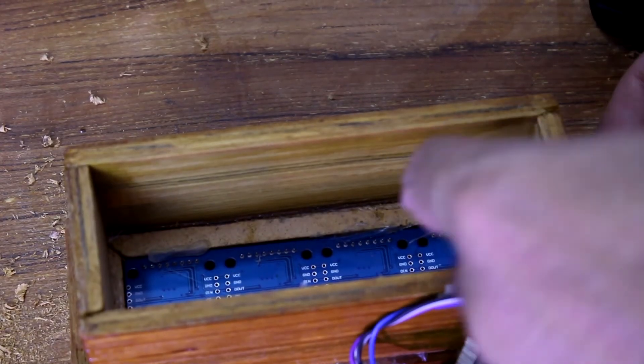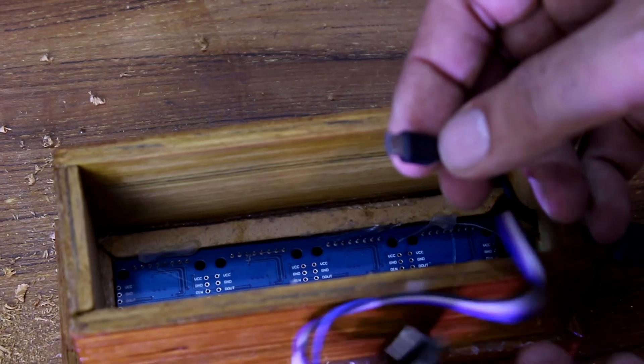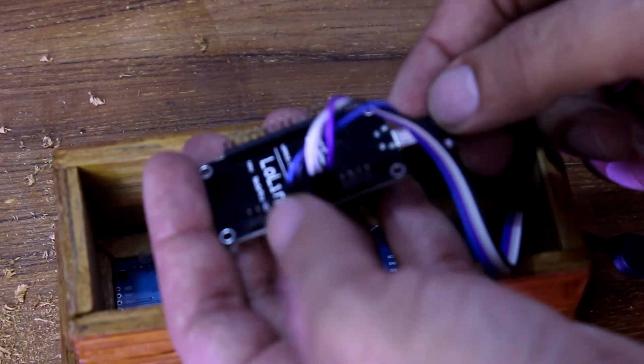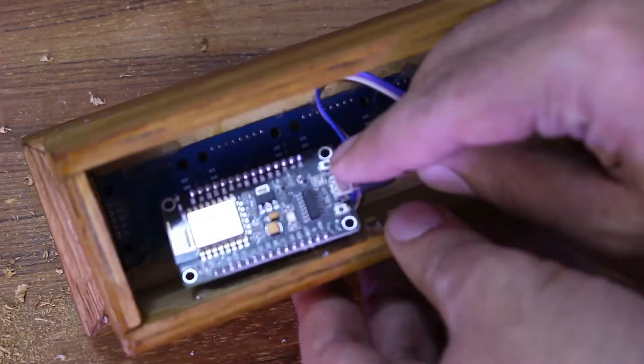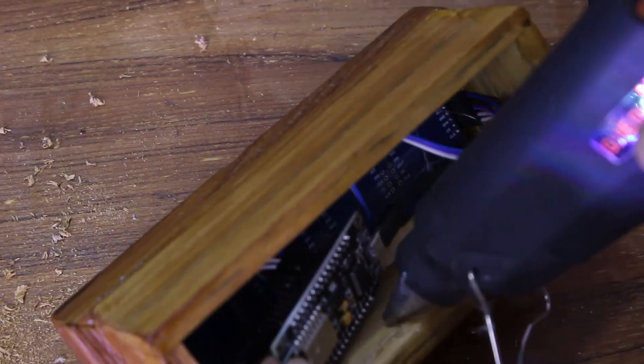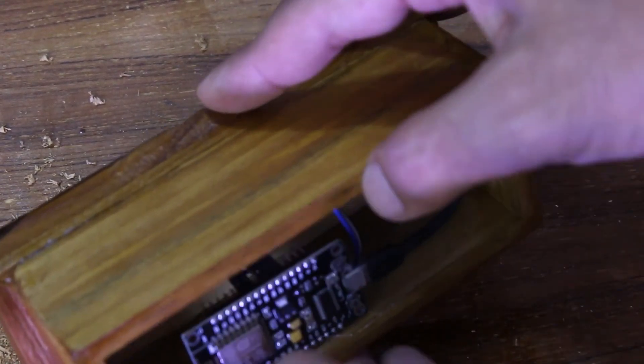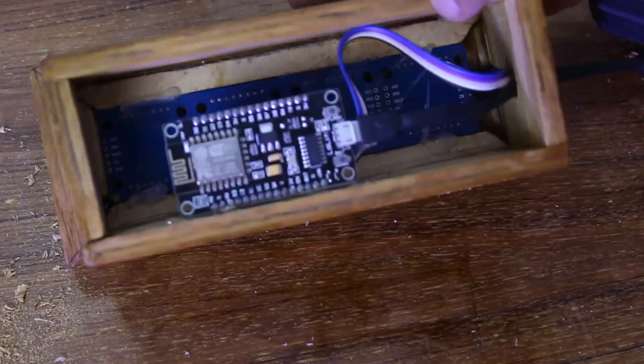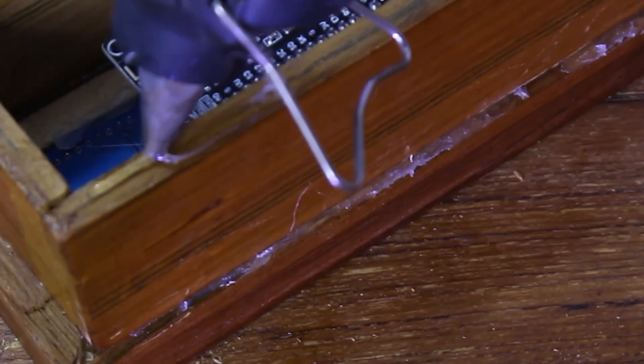Plug the USB and glue the NodeMCU inside the box. Don't make it touch the screen. Then use some glue to cover the back side of the box.